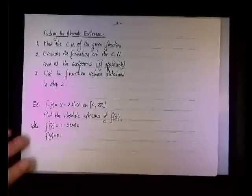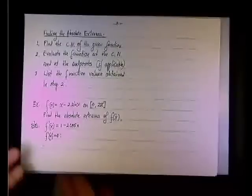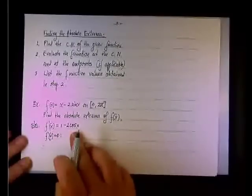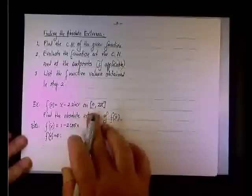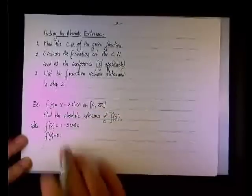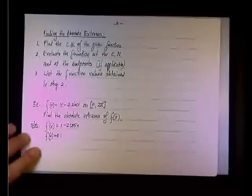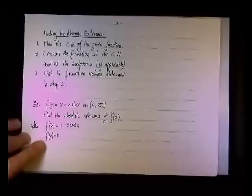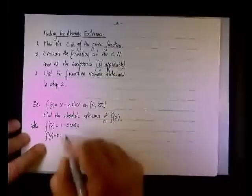Actually, that's the only thing that's applicable here, because one minus two cosine x—cosine x is continuous over all the real numbers. There are no vertical asymptotes, so if we're looking in particular at zero to two pi, it's continuous on zero to two pi, so we don't have a case where the derivative does not exist. So all we'll be interested in is to see where the derivative equals zero.